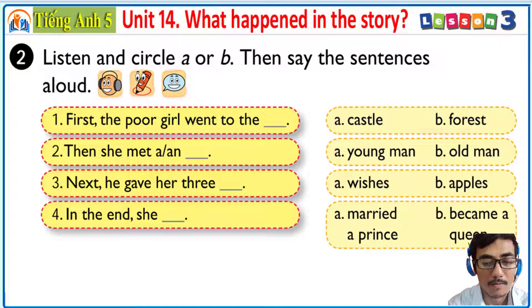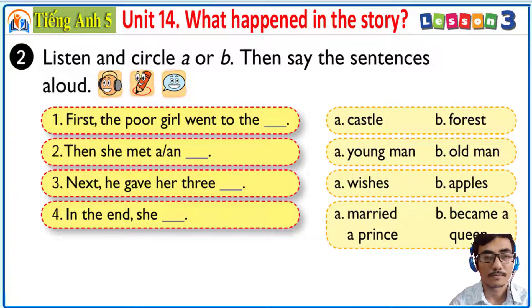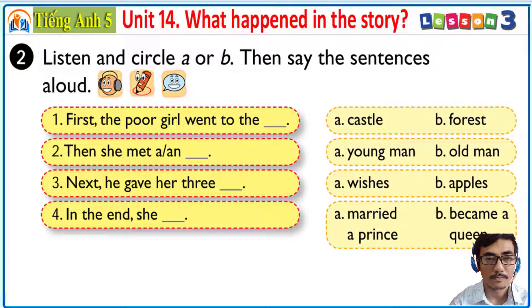One: First, the poor girl went to the forest. Two: Then she met an old man. Three: Next, he gave her three wishes. Four: In the end, she married a prince.